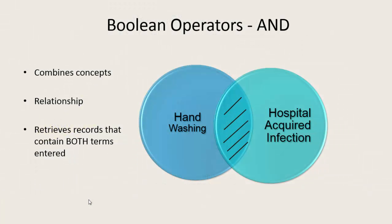When it comes to the Boolean operator AND, it's used to combine concepts together and to make a direct relationship. Going back to the question about nurses, hand washing, and its effect on hospital-acquired infections, you might search hand washing AND hospital-acquired infections to get articles that talk about hand washing in reference to hospital-acquired infections.